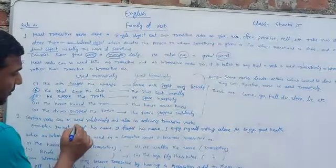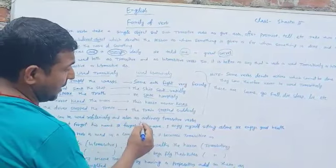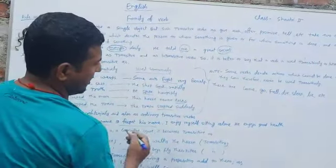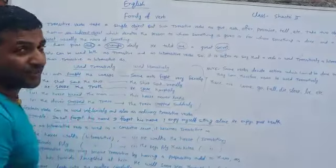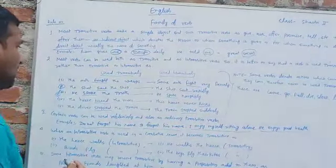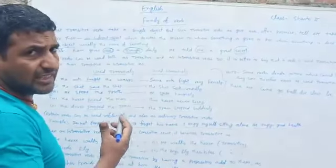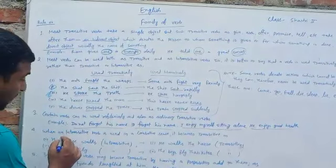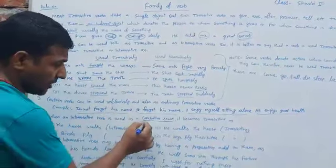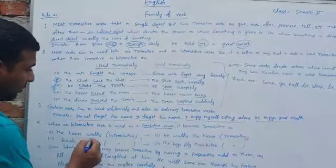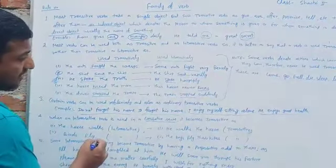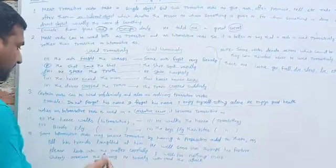Certain verbs can be used reflexively and also as ordinary transitive verbs. For example: 'Do not forget his name.' 'I enjoy myself sitting alone — because of Covid-19.' 'He enjoys good health.' Here, the verb is used reflexively. In the next rule: when an intransitive verb is used in a causative sense, it becomes transitive. As 'the horse walks' is intransitive, but 'he walks the horse' is transitive. 'The horse flies' — intransitive; 'the boys fly their kites' — transitive.